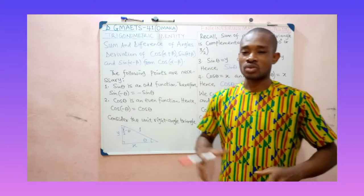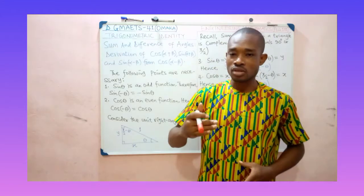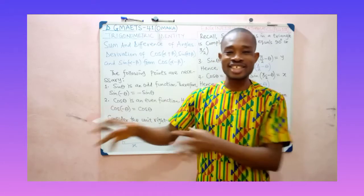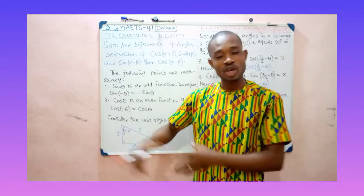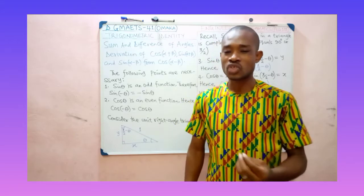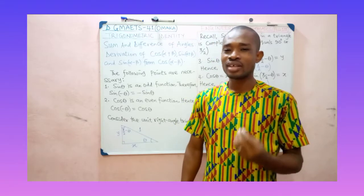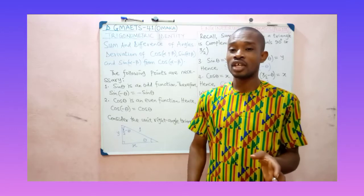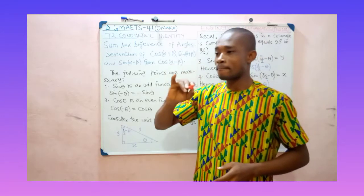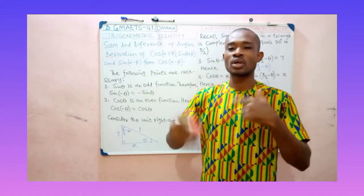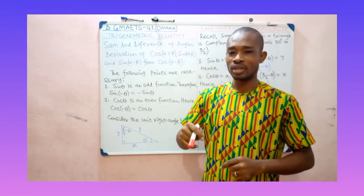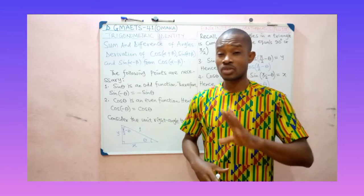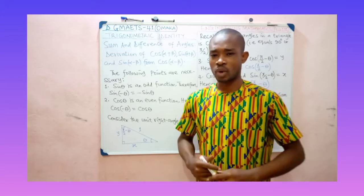What about cos? We should know that cos(−θ) would give us cos θ — that is positive cos θ — because cos θ is an even function. As an even function, even if you have something like cos(−30°), the result you are going to get would be cos 30°. These concepts are very, very important.